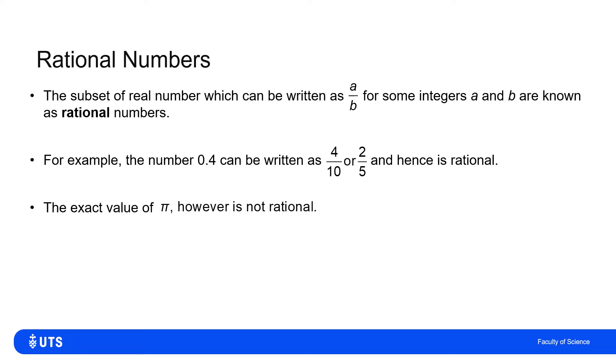Famously, the exact value of pi is not rational. People might write it's approximately 22 over 7. That's true, approximately, but there is no integer divided by another integer form that will give the exact value of pi.